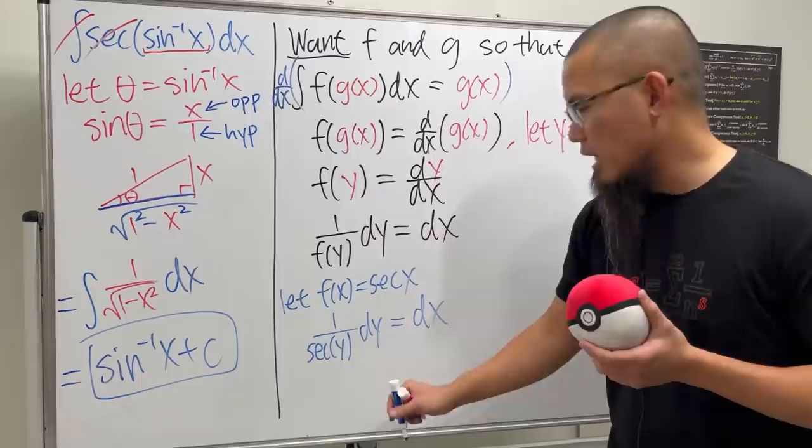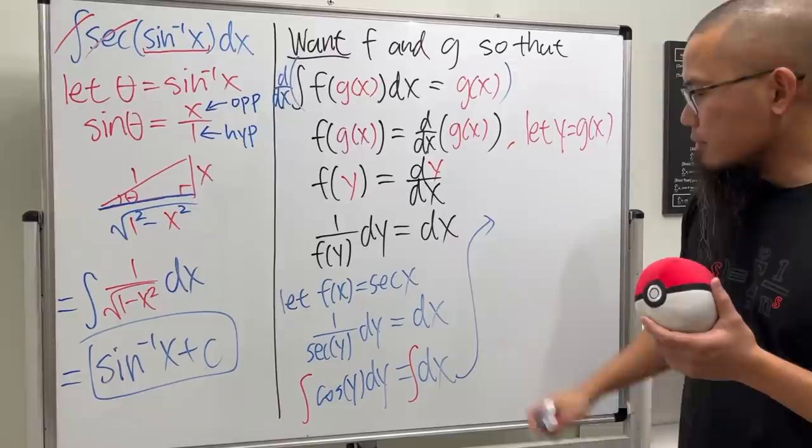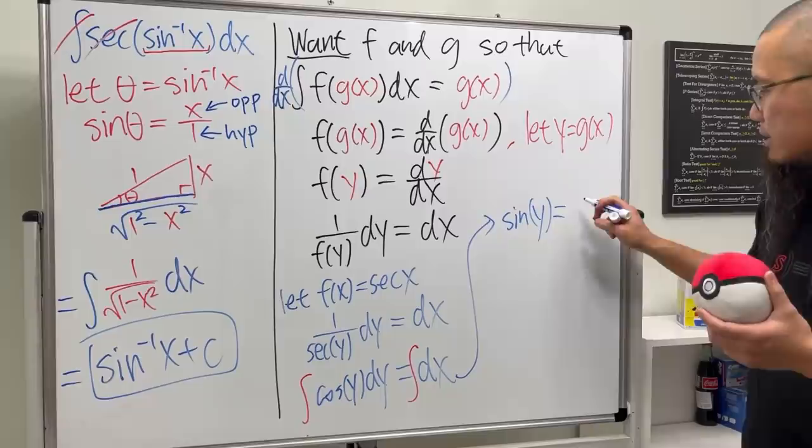And of course look at this, this is not bad to integrate because 1 over secant is just cosine. So this is actually just cosine of y and then dy, that's equal to dx. And then we can integrate both sides and you see integral of cosine is just going to be plus this sine, and then we have the y, and then this is equal to just x.